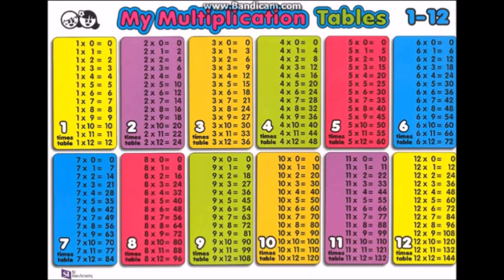12 times 0 is 0, 12 times 1 is 12, 12 times 2 is 24, 12 times 3 is 36, 12 times 4 is 48, 12 times 5 is 60, 12 times 6 is 72.